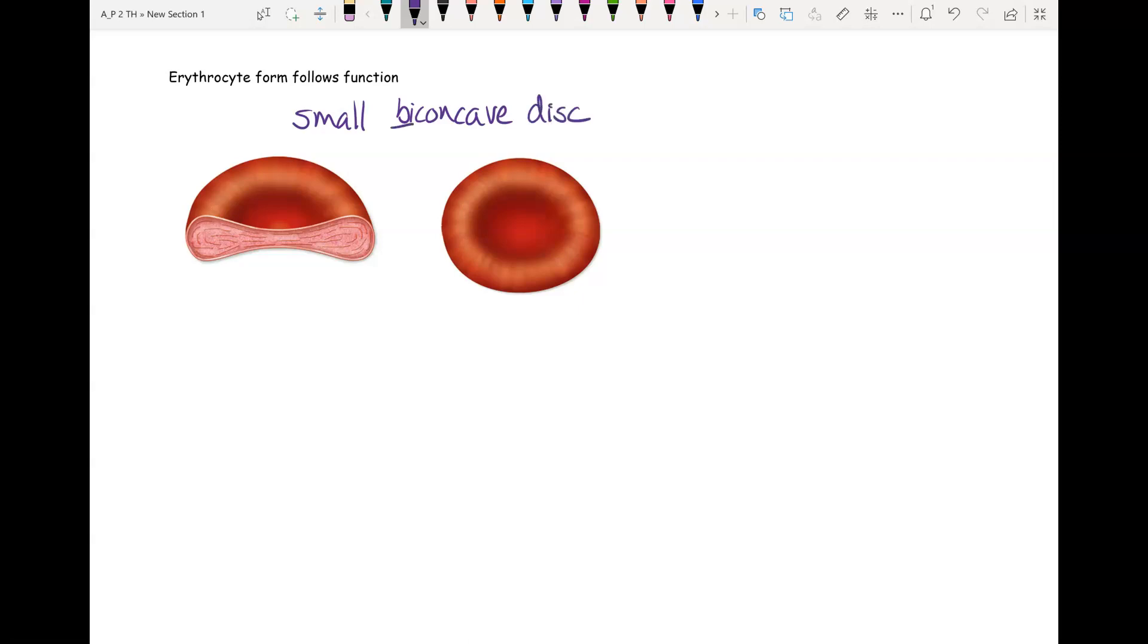So if we break this down, bi means two, concave means it's dented in. If you can see here it dents in, here it dents in. That's your biconcave. And then disc means that it's a flat circle.